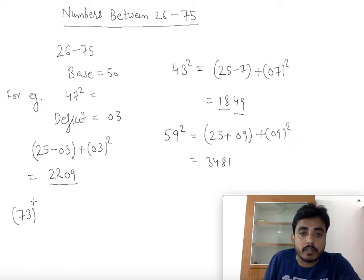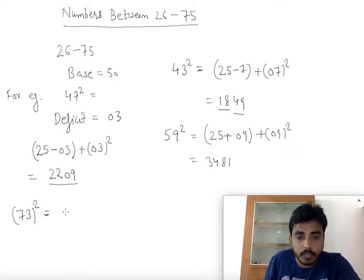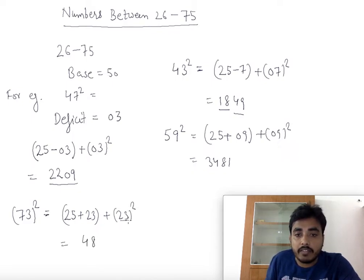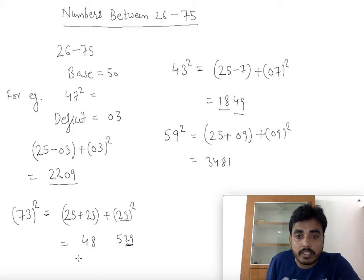Let's find the square of 73. This is 23 greater than 50. So we compute 25 plus 23, which is 48, plus 23 squared which is 529. We take only the last two digits — 29 — and carry the 5 to 48, giving 5329.